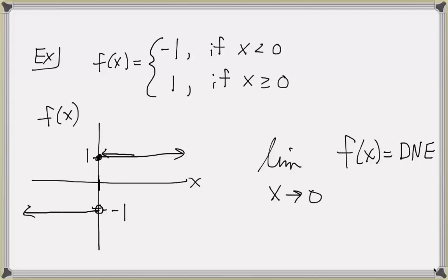Here's how we would denote this. As x approaches 0 from the right, the notation changes by putting a plus sign as almost like an exponent on the limiting value of x. This notation means: look at the values of the function f as x approaches 0, but only for values slightly to the right of 0. We saw that the right-hand limit of this function is positive 1.